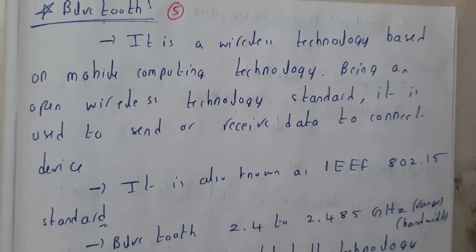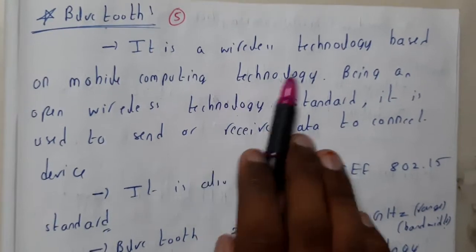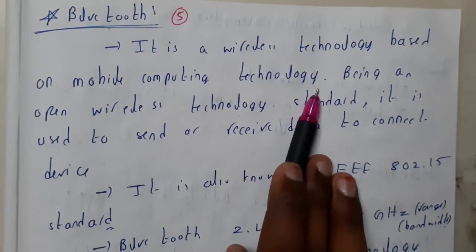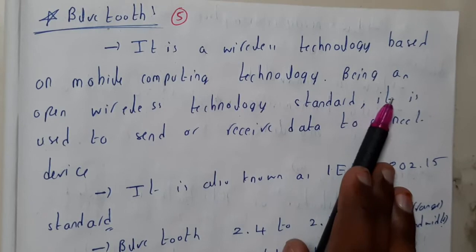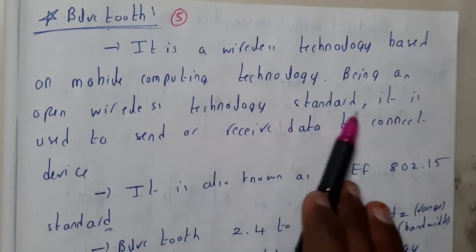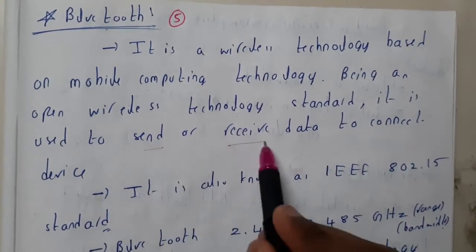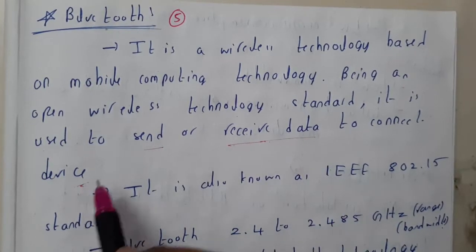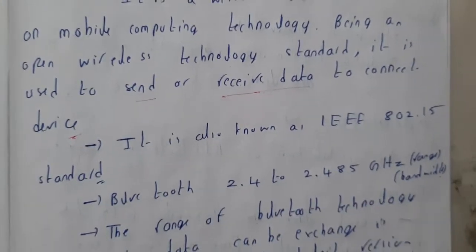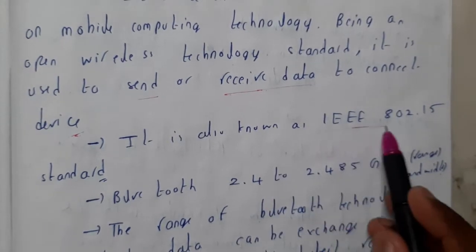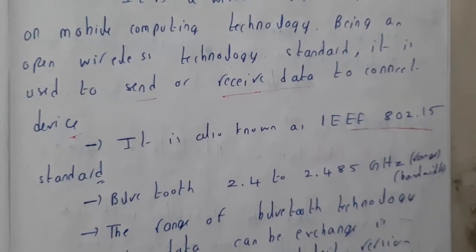Bluetooth is a wireless technology based on mobile computing technology. Being an open wireless technology standard, it is used to send and receive data to connected devices — so we can send and receive data through connected devices.